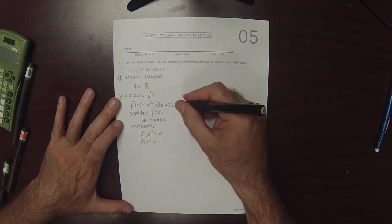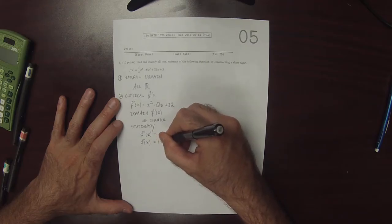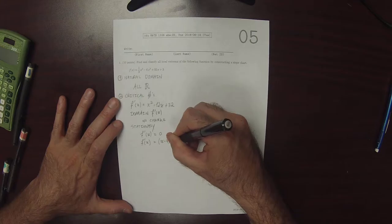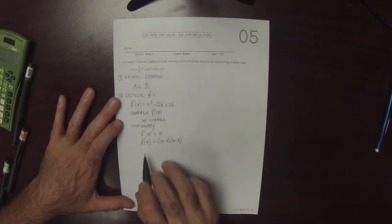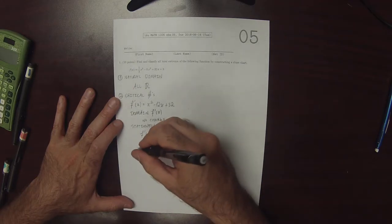So two numbers whose product is 32 and whose sum is negative 12. How about x minus 4 and x minus 8. So the derivative is equal to zero exactly when x is 4 or x is 8.